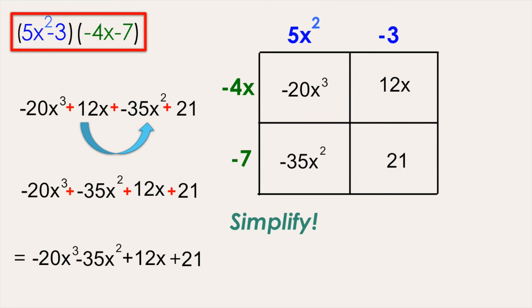And the product of the two binomials, 5x squared minus 3 times negative 4x minus 7 is negative 20x cubed minus 35x squared plus 12x plus 21. And this is how you can solve that using the box method.